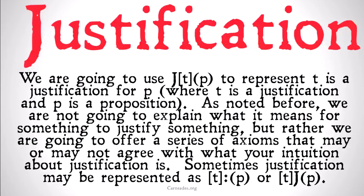You can choose from those axioms how you want to create your own system of justification, or how you want to map those axioms onto an already possessed system of justification. Sometimes justification is going to be represented as T colon P, with T in square brackets, or T J P, with or without the brackets.